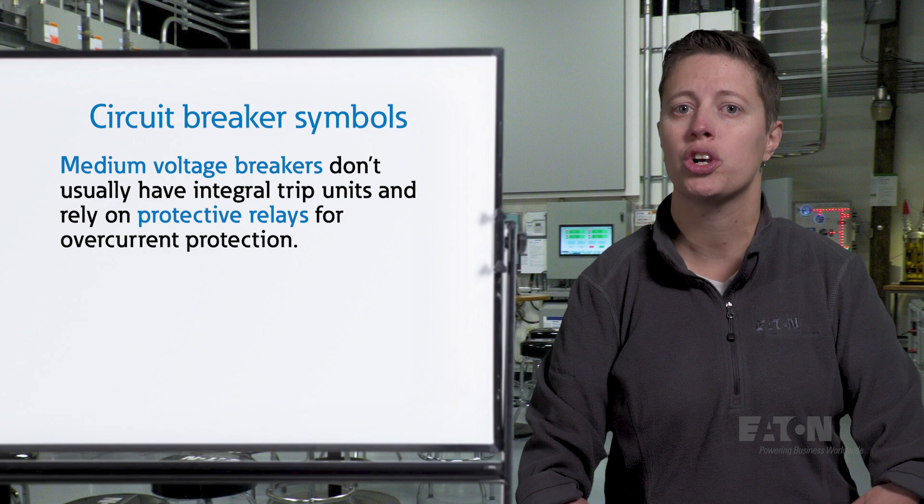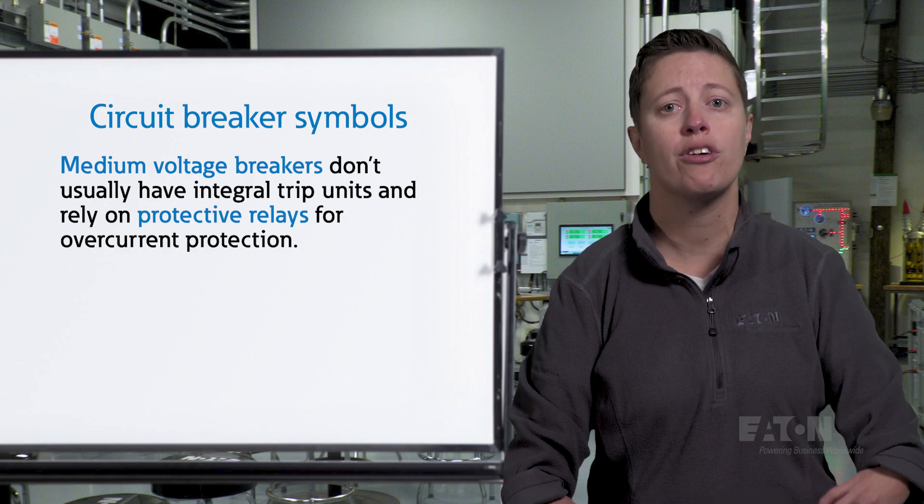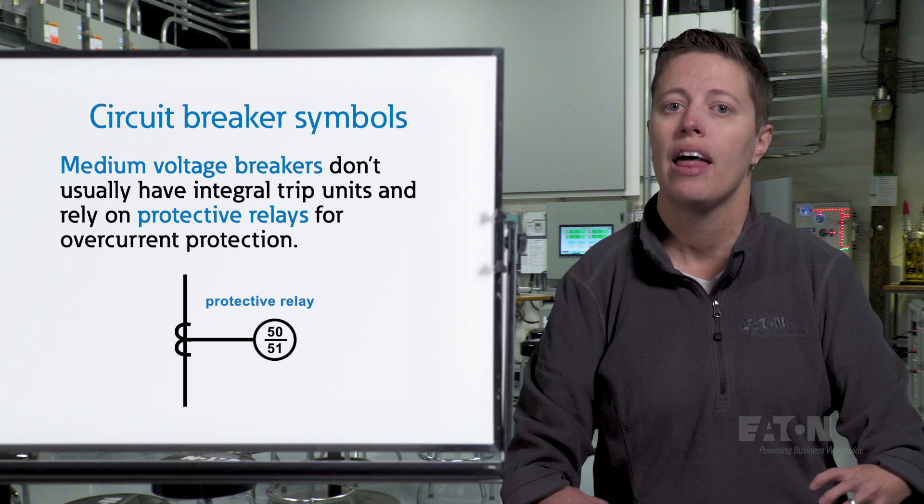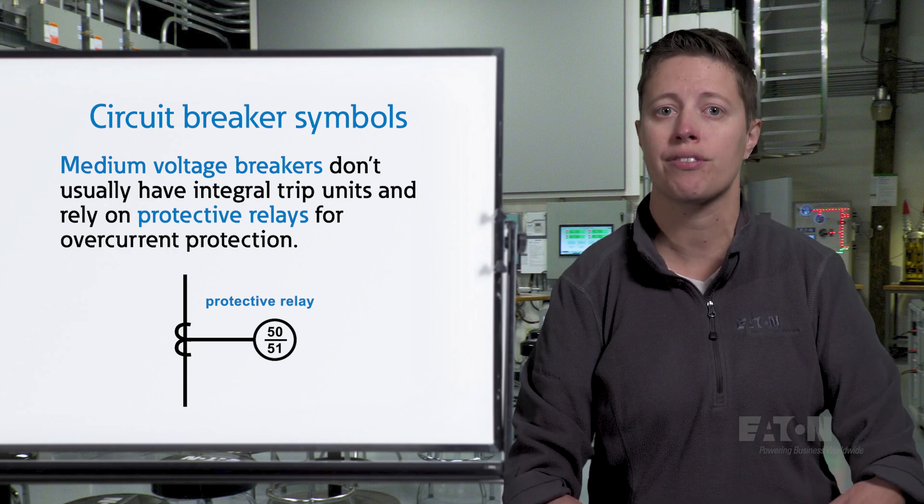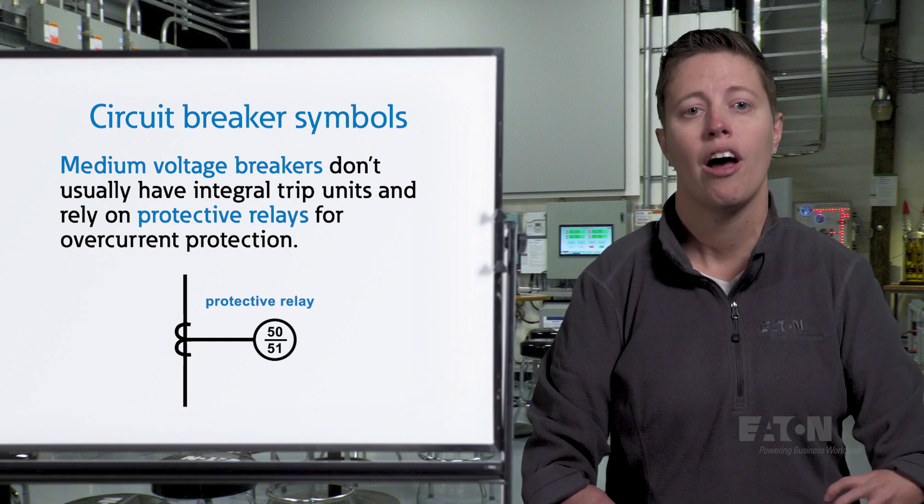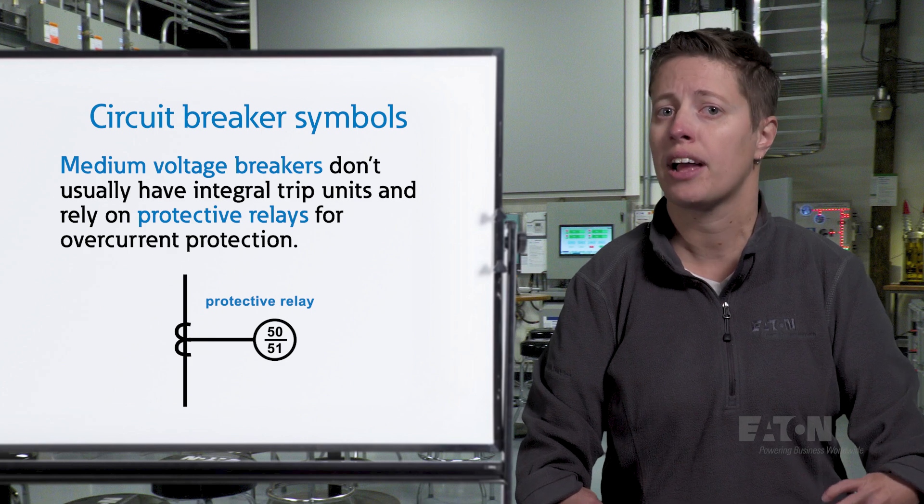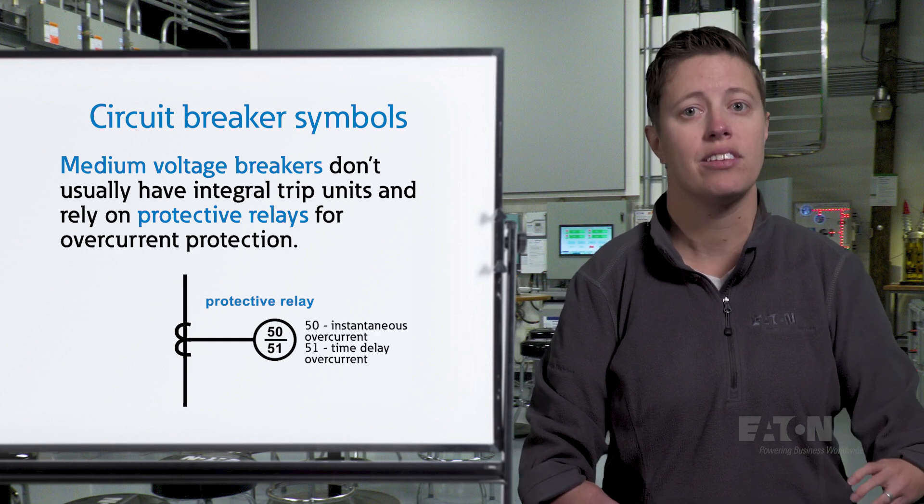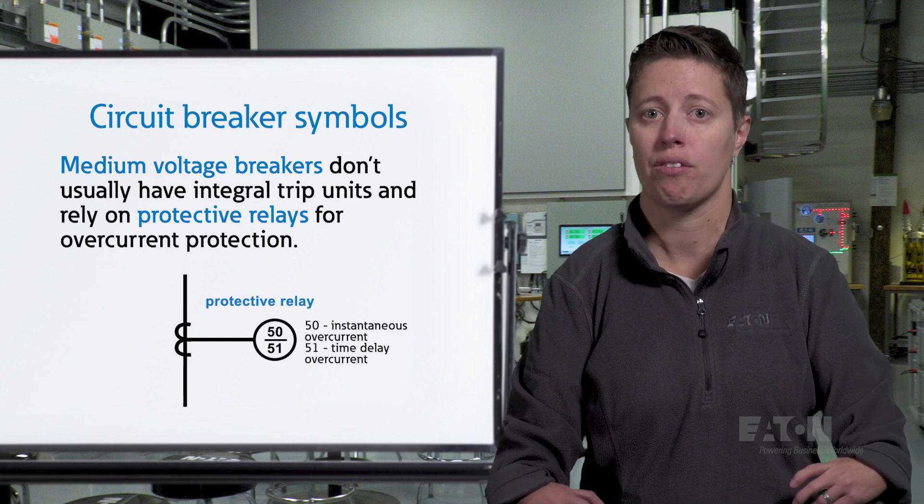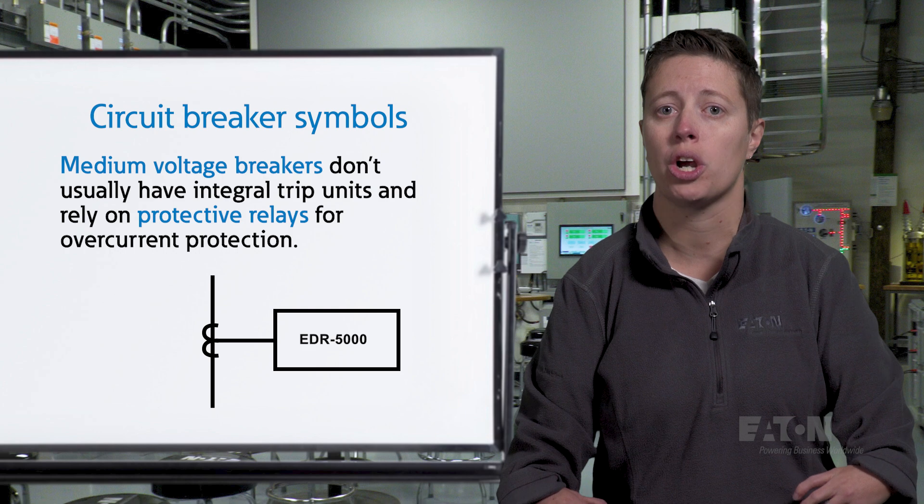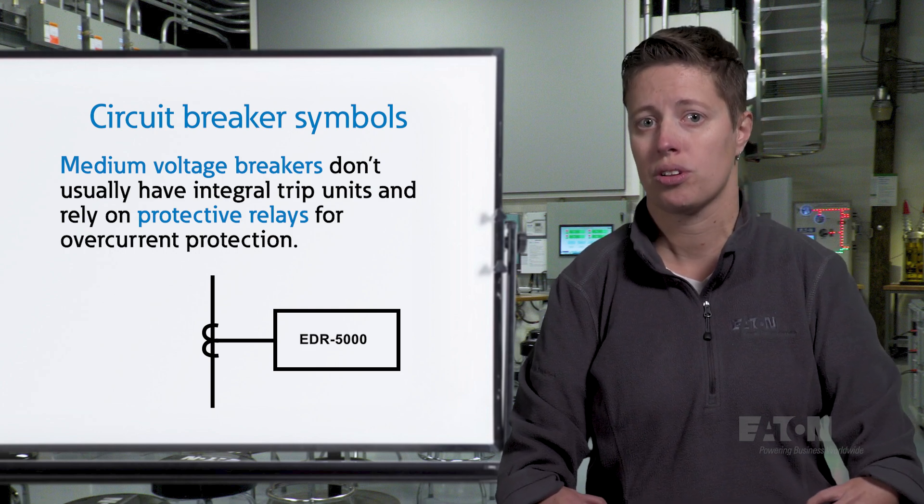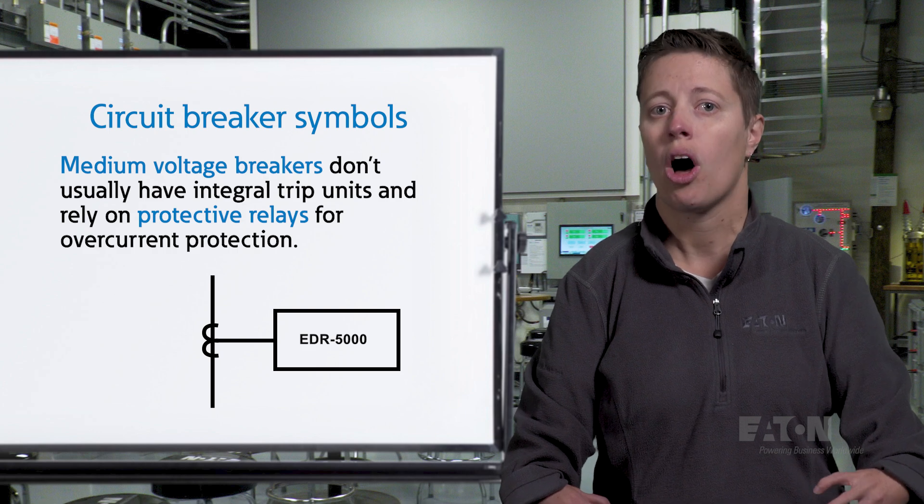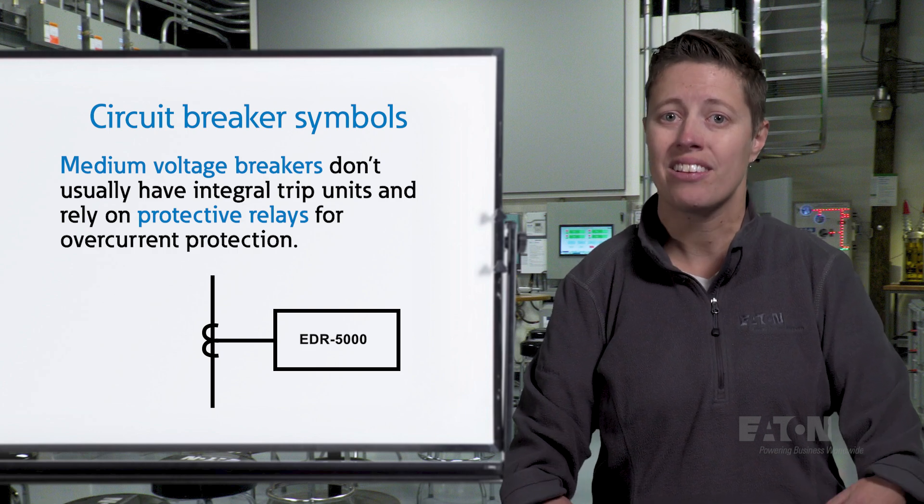Medium voltage breakers do not usually have integral trip units and rely on protective relays for overcurrent protection. A protective relay may be indicated by a two-digit number within a circle. This two-digit number is a reference to the ANSI device number corresponding to the function the relay performs. For example, a circle noting 50-51 indicates the breaker is protected by a protective relay performing function 50, instantaneous overcurrent, and function 51, time delay overcurrent. The protective relay may also be shown by a rectangle with the model number of the relay to be used. This example shows an Eaton EDR5000 protective relay. For more detail on protective relays, see our video on the basics of protective relaying.